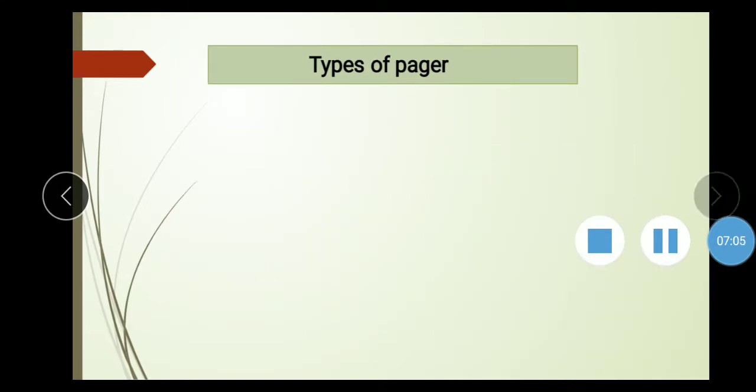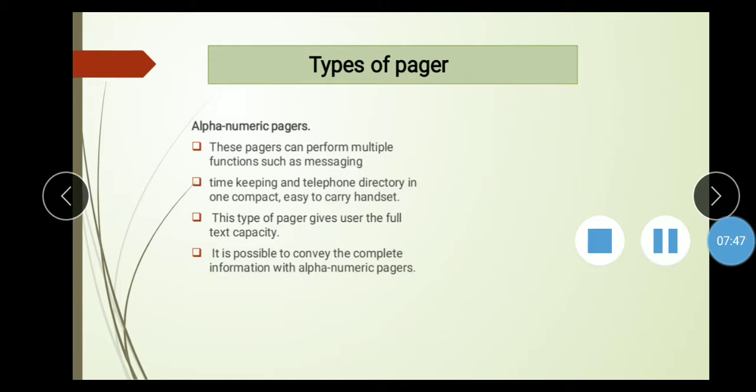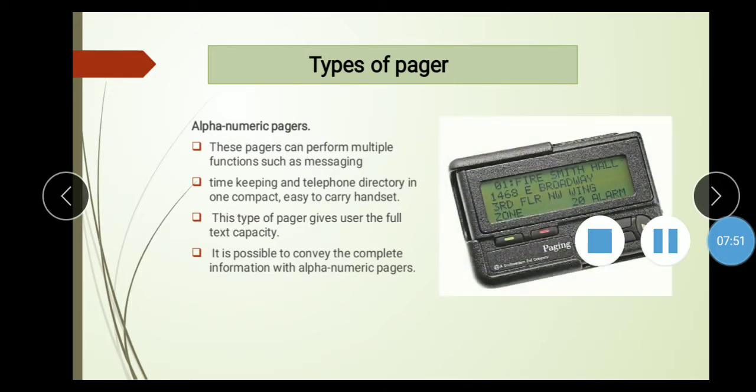Second topic is alphanumeric pagers. What is alphanumeric pagers? These pagers can perform multiple functions such as messaging, timekeeping and telephone directory in one compact easy to carry handset. This type of pagers give user the full text capacity. It is possible to convey the complete information with alphanumerical message. If you have a full sentence or full information, you will use the alphanumeric pagers.